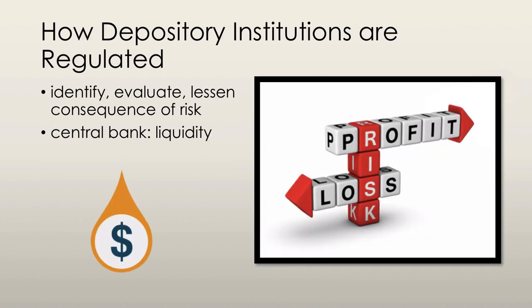The goal of financial regulation is to identify, evaluate, and lessen the consequences of financial risk. The central bank ensures that commercial banks and other institutions have adequate liquidity, and it does this by providing general guidance and knowledge to these commercial banks. It also provides advice to the government.